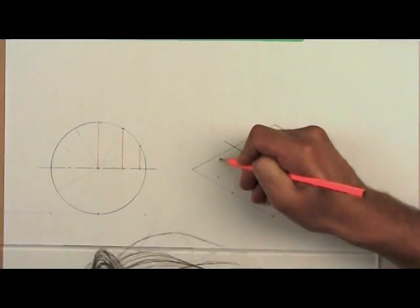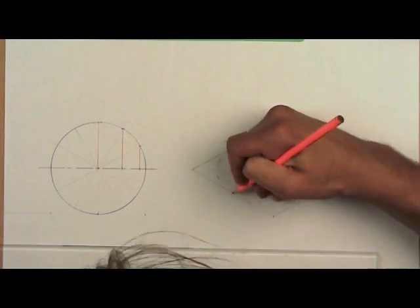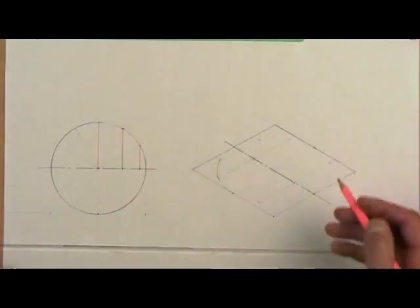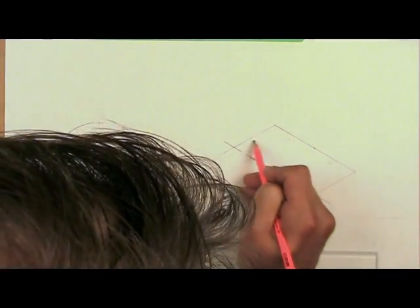Once you've got all these points you can begin to complete the isometric circle by carefully joining the dots.